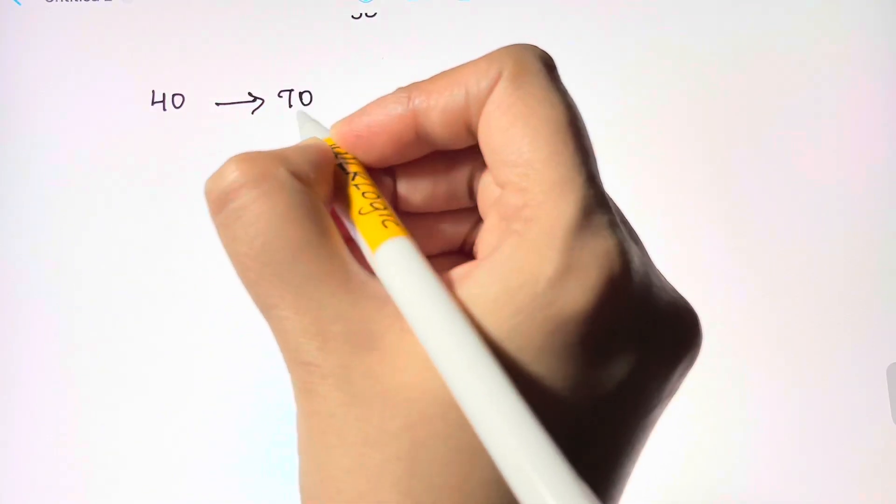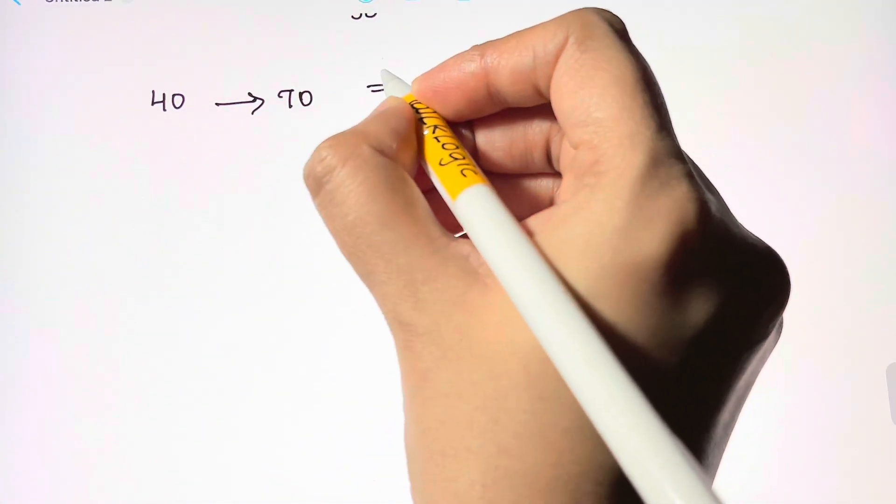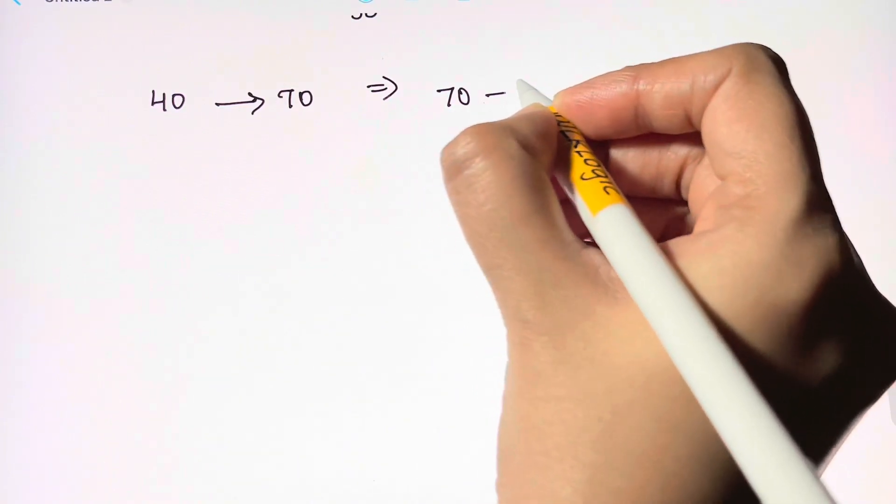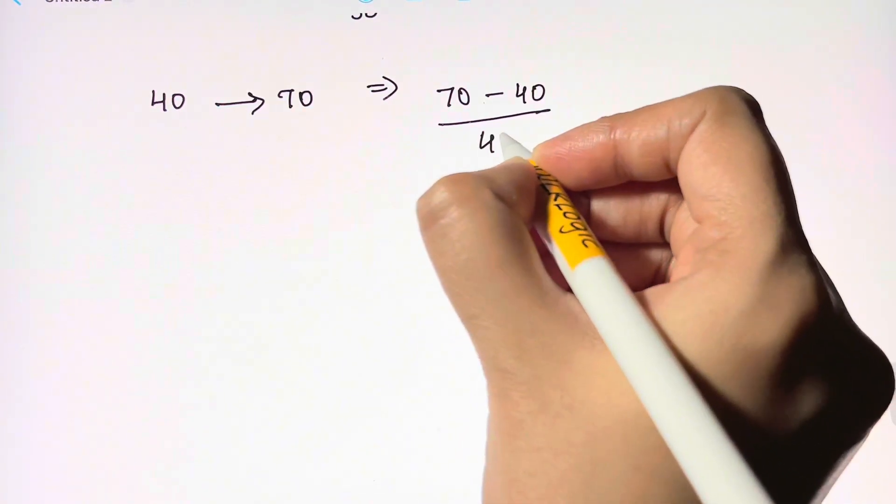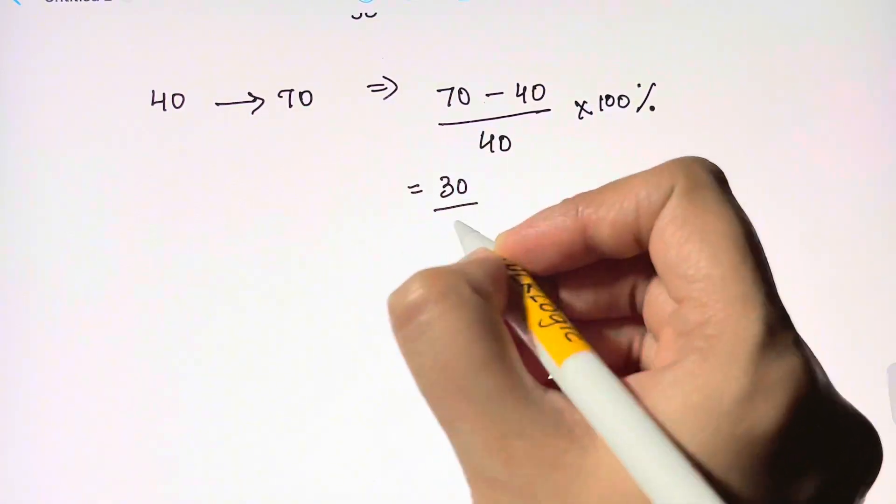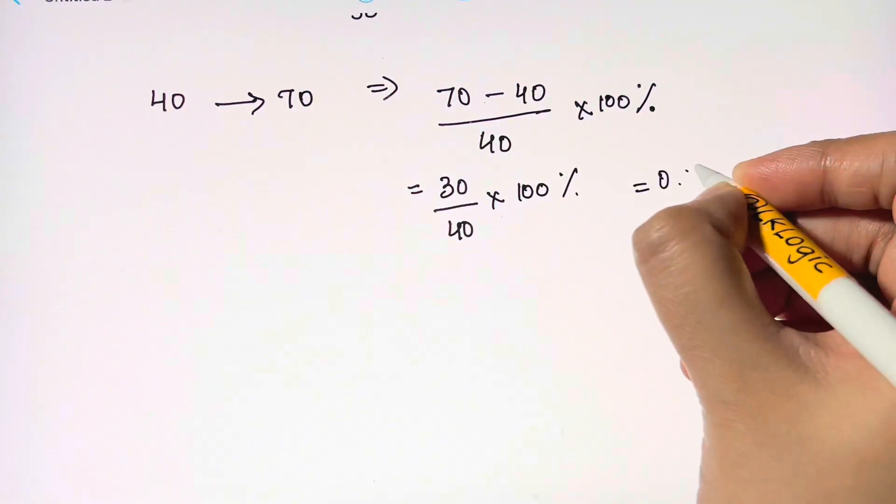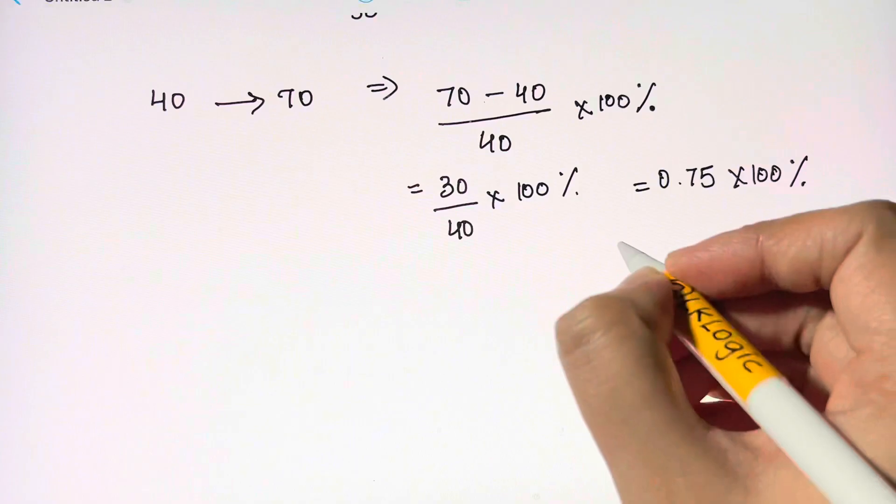70 is the new value and 40 is the original value, so let's substitute that: 70 minus 40 divided by 40 times hundred percent. So that's 30 over 40, 30 over 40 is 0.75 times hundred percent, that is 75 percent.